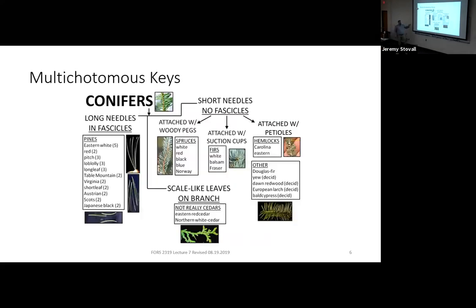You can make up different types of multi-chotomous keys to help you learn your trees, but we don't usually use them to identify new species. Here's an example of a bunch of conifers split up based on different categorizations — similar to what I showed you in the intro to lab video this semester, where you could see how to break up the 15 or so species and start telling them apart from one another.